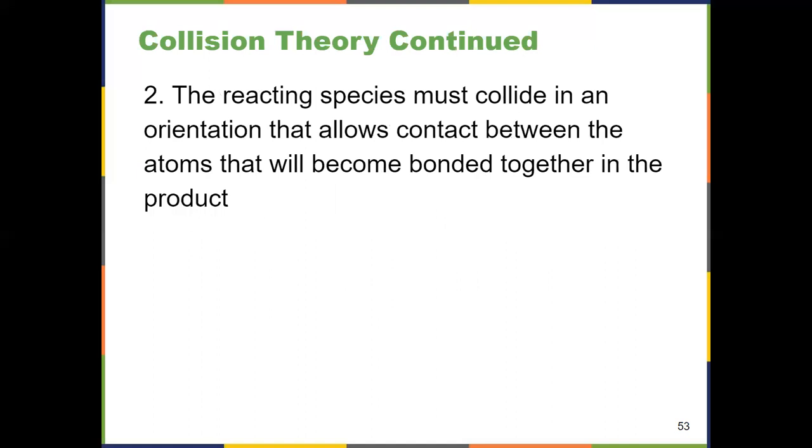Postulate number two tells us that not only must reactants collide together, but the things that are reacting have to collide in a specific orientation that allows contact between the atoms that are going to form a bond. It's another way to think about this is that these reactions have to happen in a specific orientation. The things have to come together.